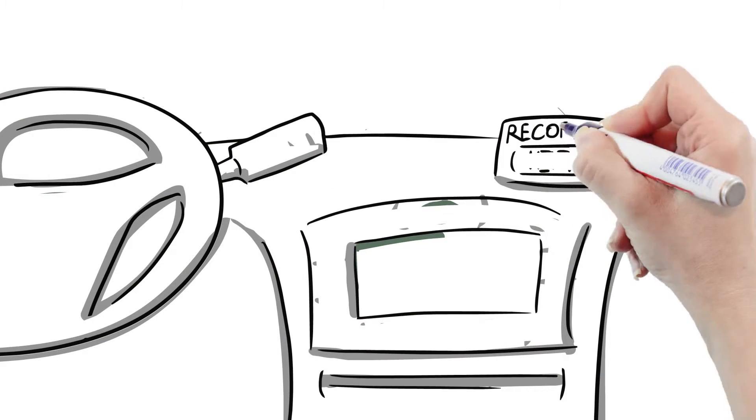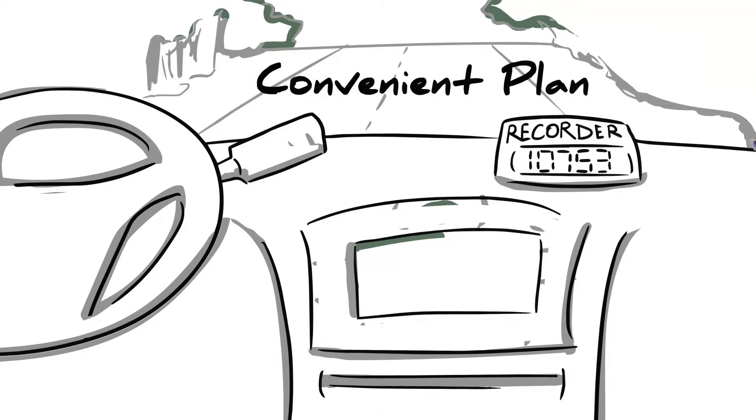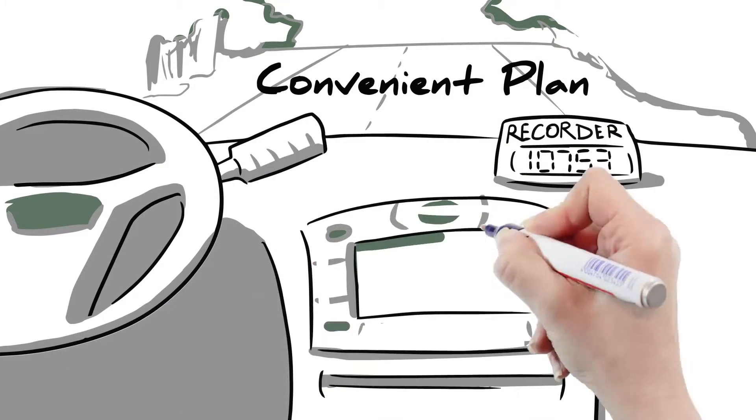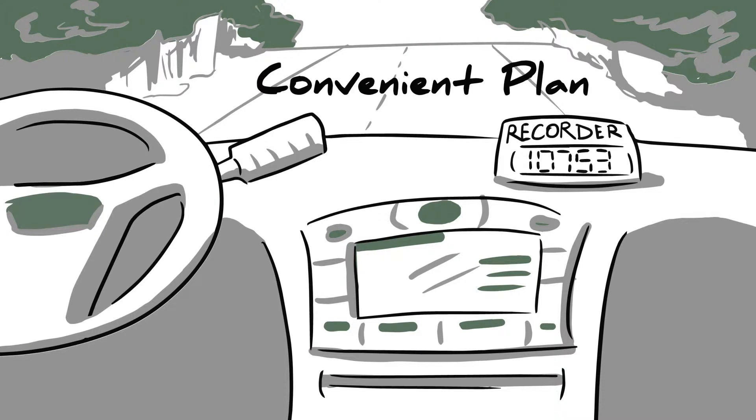The iRIDE Convenient Plan records all miles traveled without the use of GPS location services for residents who wish to keep their location private.